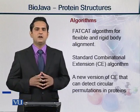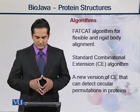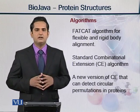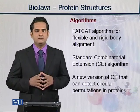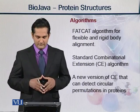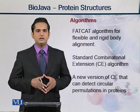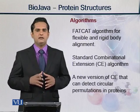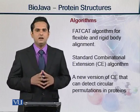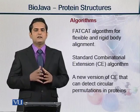What are the algorithms in this BioJava module for proteins? Number one is the Fat Cat algorithm, which is basically an algorithm for flexible and rigid boundary alignment — meaning, if we have different protein sequences, how we will align them together. Similarly, we have two other algorithms: the standard combinatorial extension algorithm, and the combinatorial algorithm itself, which takes help from combinatorial chemistry to show how many different domains to combine in protein structures.